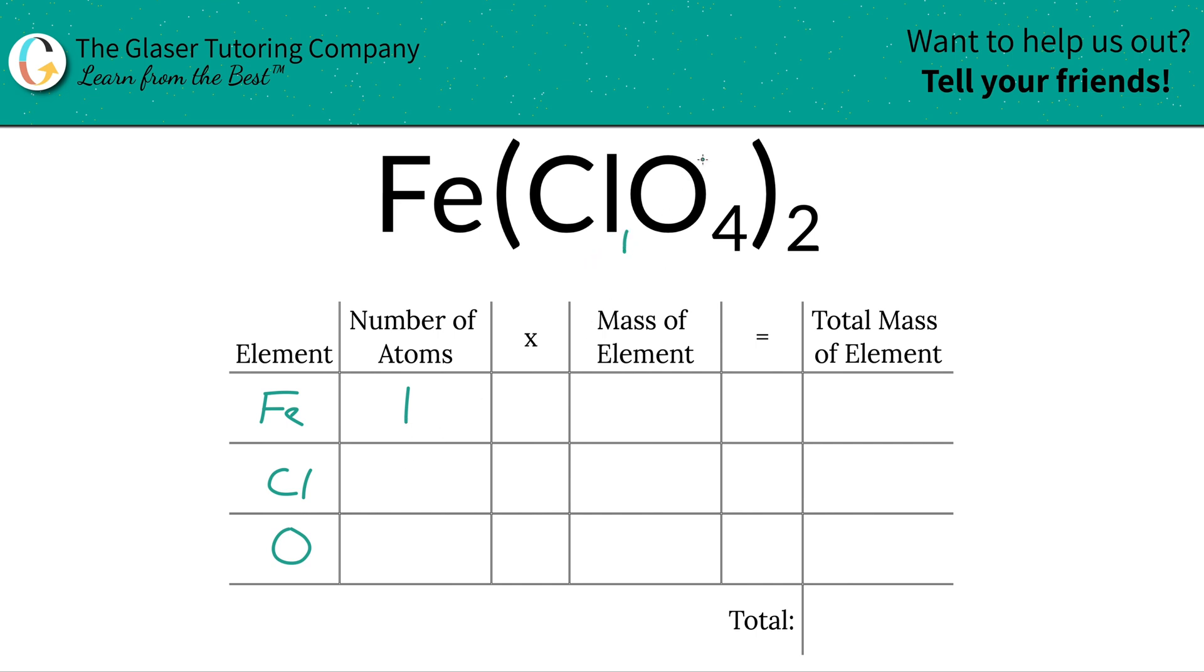For chlorine here, it's a little different. There is a 1 there, but that's part of the perchlorate anion. Since we have two perchlorate anions, there's actually two chlorine.